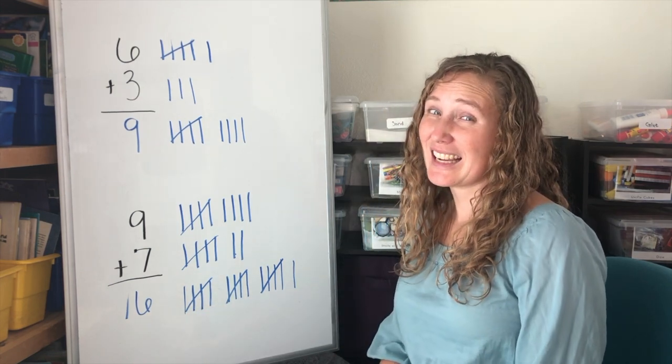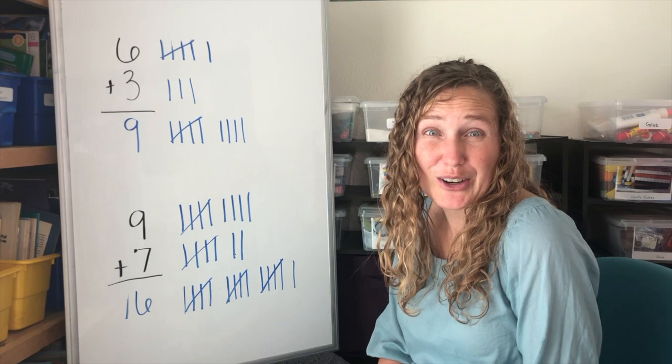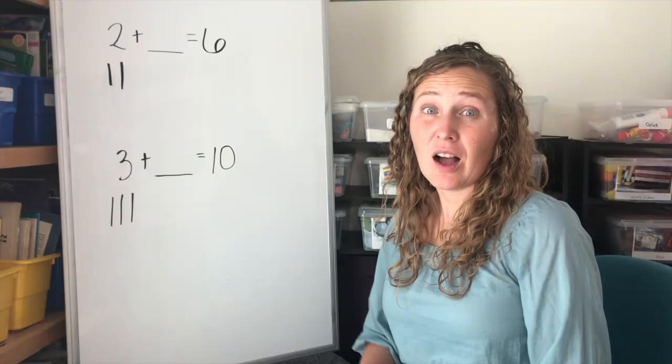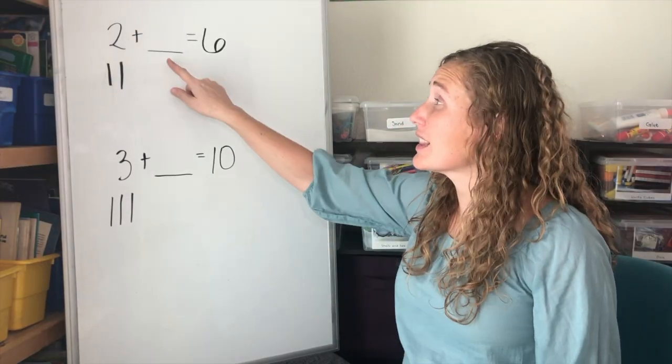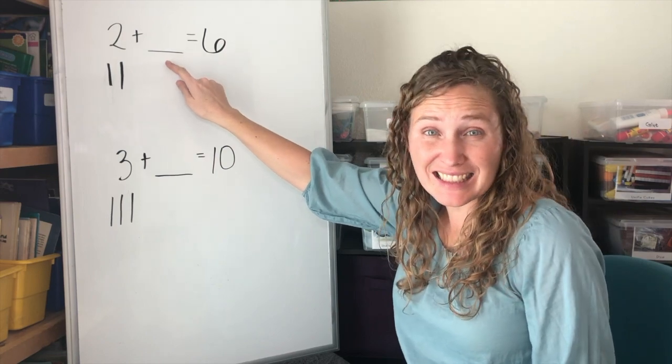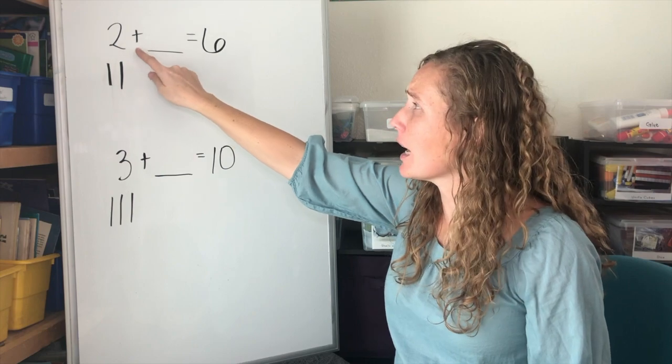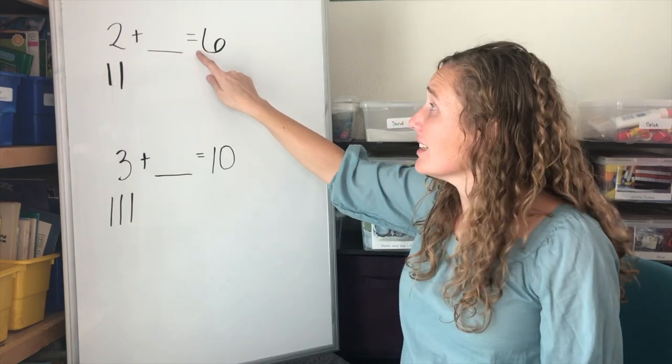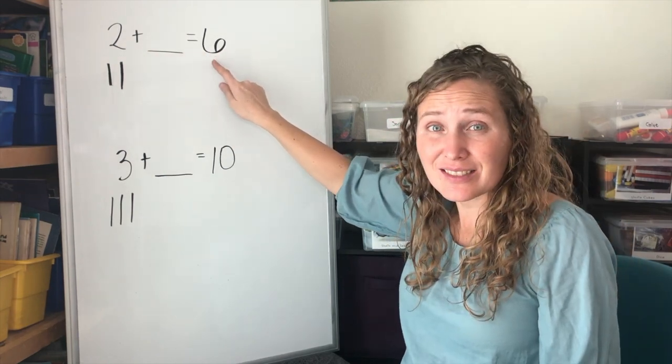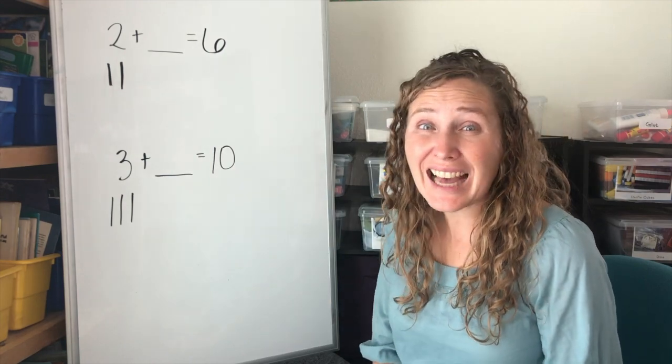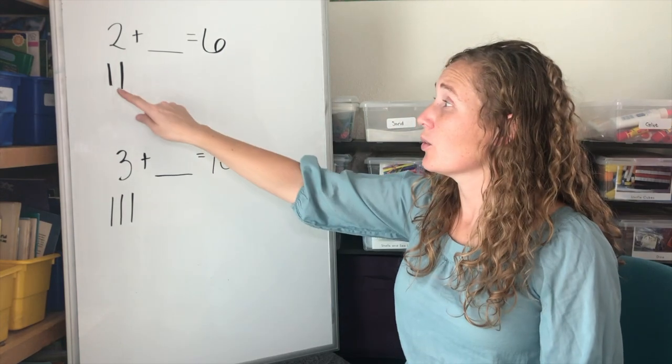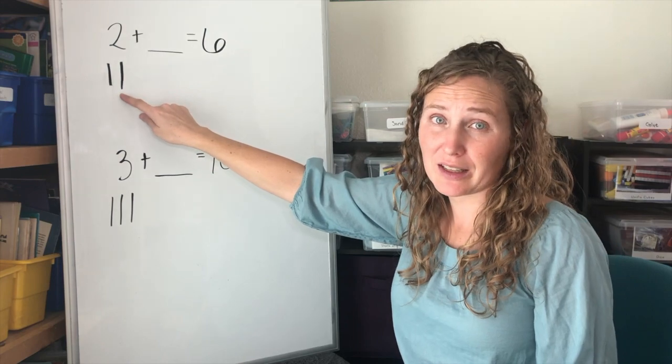Can we make it a little bit harder? Now we need to find the missing addend. The missing number. Two plus what equals six? Well, we can use tallies to help us.